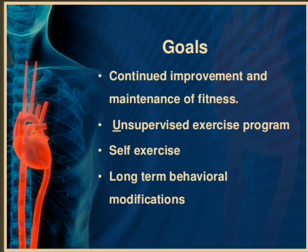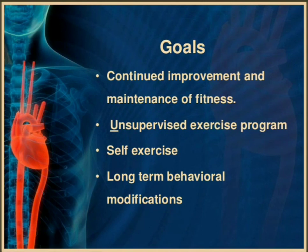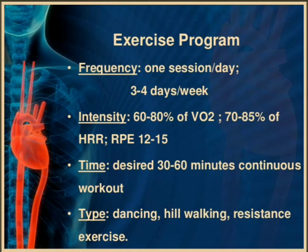Phase 4 goals: continued improvement and maintenance of fitness, unsupervised exercise program, self-exercise, and long-term behavioral modifications. Exercise program: frequency one session a day, 3 to 4 days a week; intensity 60 to 80 percent of VO2 max, 70 to 85 percent of heart rate reserve, RPE 12 to 15; time 30 to 60 minutes continuous workout; type: dancing, hill walking, resistance exercise.